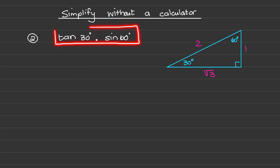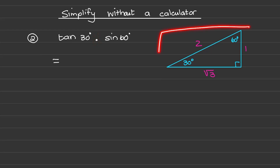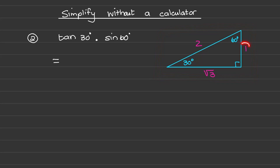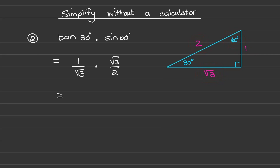We can also use the special angles when we have two trig ratios that we are multiplying with each other, using the same triangle from memory. The tan of 30 is the opposite over the adjacent, so that is one over square root of three. The sine of 60 is square root of three over two. To simplify this multiplication, the square root of three in the numerator cancels the square root of three in the denominator, leaving one over two.